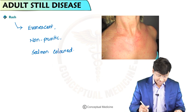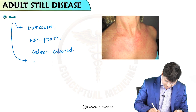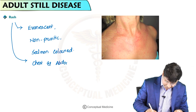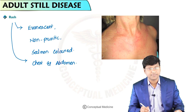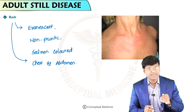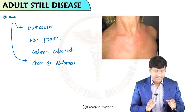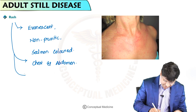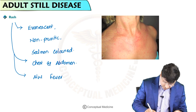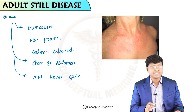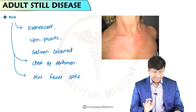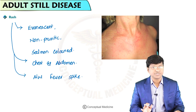This particular rash is distributed over the chest and as well as the abdomen. This rash can easily be missed since it often appears only with the fever spike. That is the description of the rash in patients with Adult Still's disease.